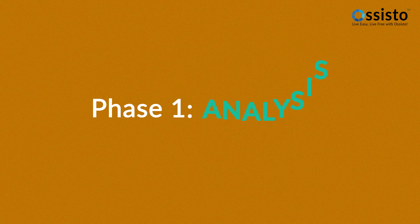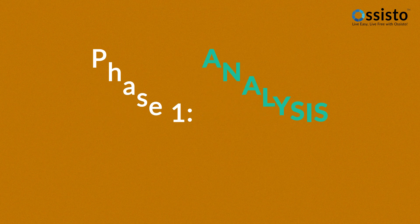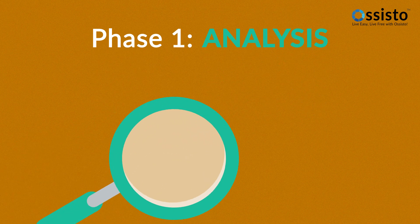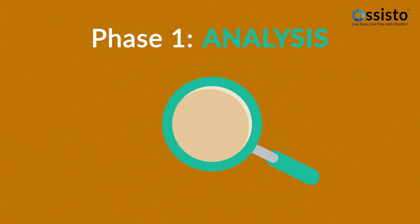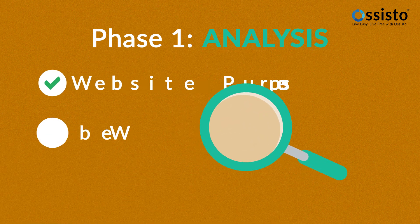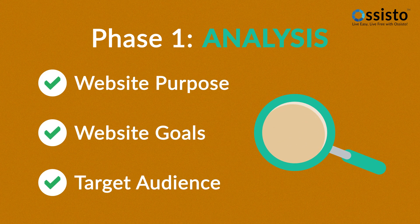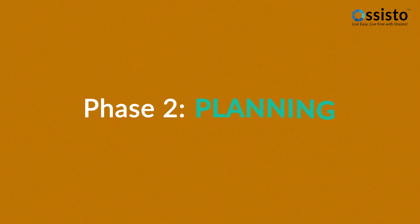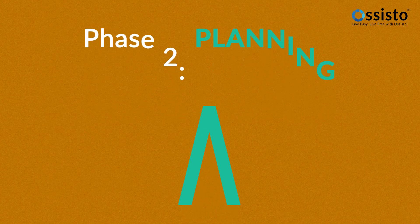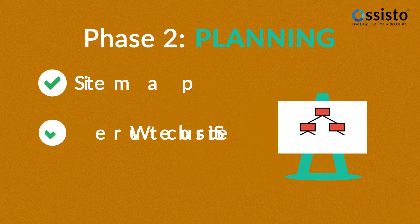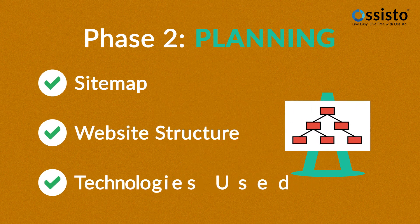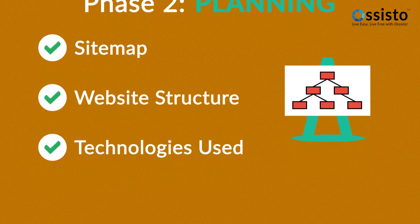Phase 1: Analysis. The first step is always about information gathering, identifying things like the website purpose, goals, and target audience. Phase 2: Planning. A plan includes a definition of the sitemap, structure, and technologies that we're about to use.